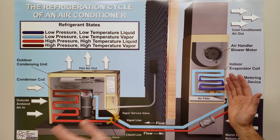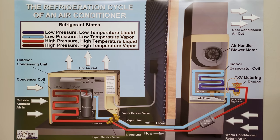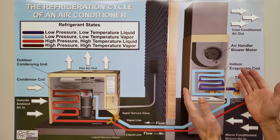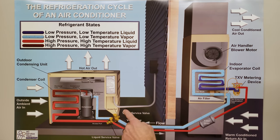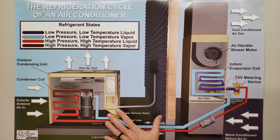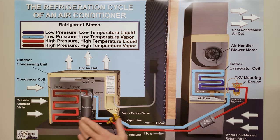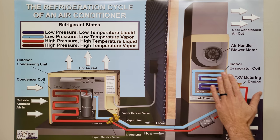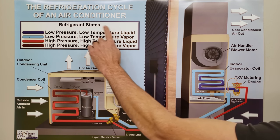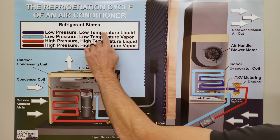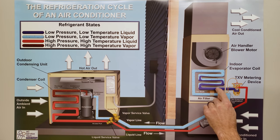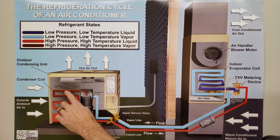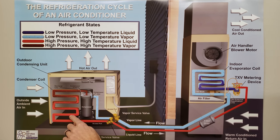Let me give you a quick tour of what's happening here. We have an air handler — the indoor unit — and an outdoor condensing unit. We've cut open the system to show the refrigerant flowing through it. Up here is a guide for refrigerant state: low-pressure low-temperature liquid, low-pressure low-temperature vapor, high-pressure vapor, and high-pressure liquid.